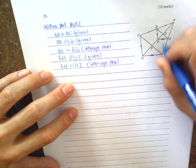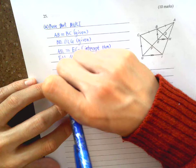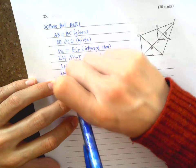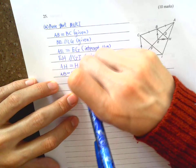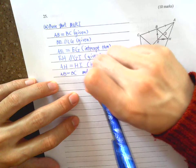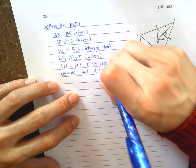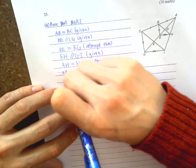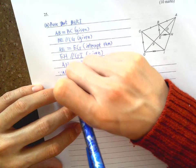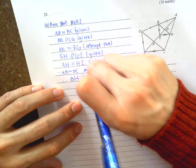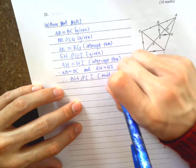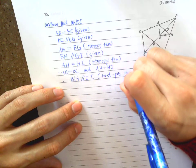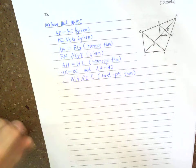And last one will be, because you know AB equals BC and AH equals HI, therefore BH parallel to CI. This is the midpoint theorem. Okay, so this is part A.